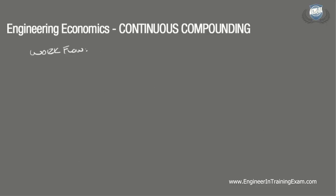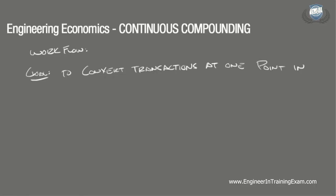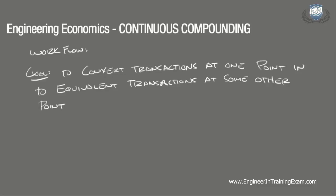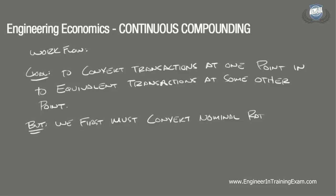So let's walk through the general workflow. The goal of a continuous compounding problem is the same as any of the previous problems we have encountered up to this point: to convert a certain monetary transaction or transactions into some equivalent transaction or transactions at some other point in time. Because we are dealing with an interest rate that is compounded continuously over the year, we must convert that rate first into what is called an annual effective interest rate before continuing along in our normal workflow.